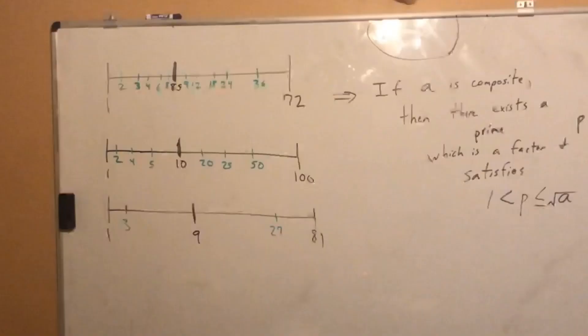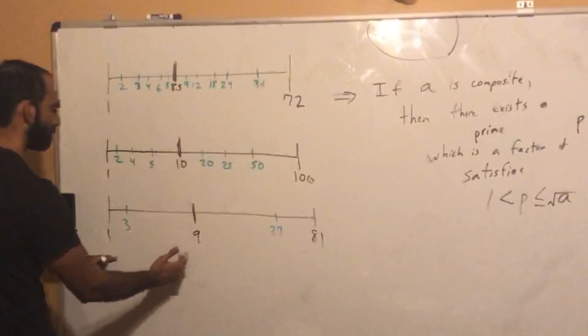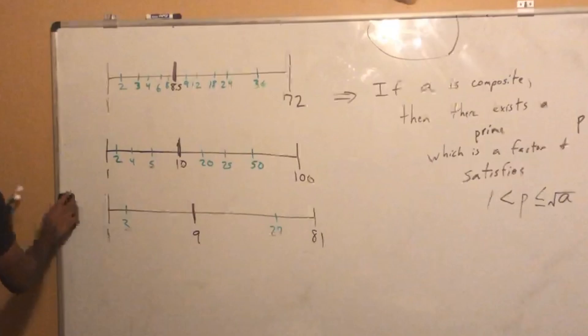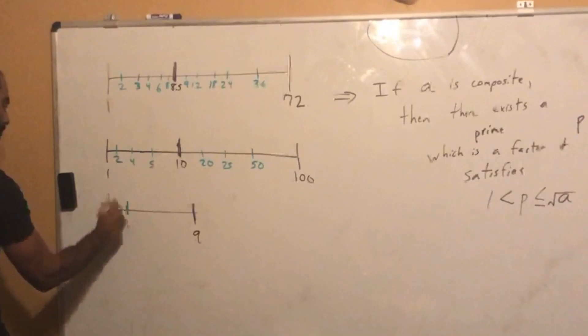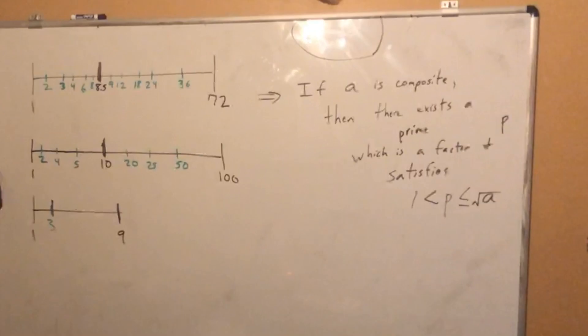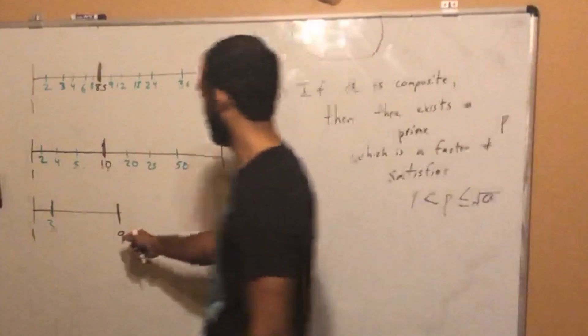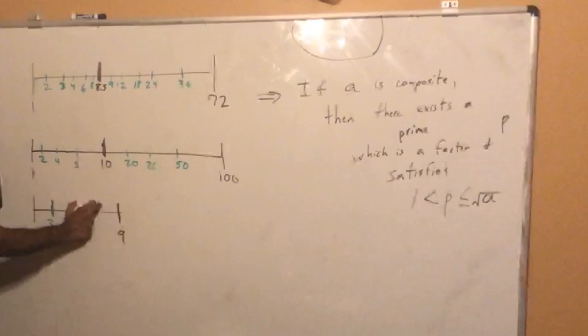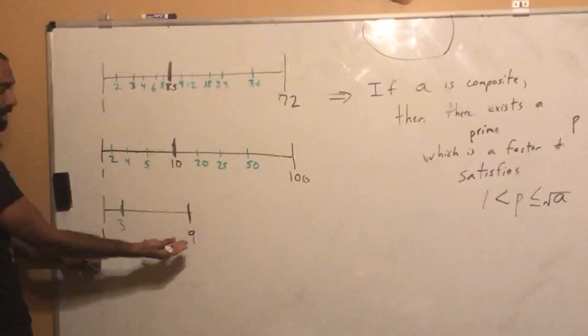And that satisfies this: 1 is less than this number P, which is less than or equal to the square root of A. I'm measuring P with respect to that partition point. So everything to the left of that midpoint will have a prime number, left or equal to that midpoint. I include the less than or equal to sign because of examples like 9.